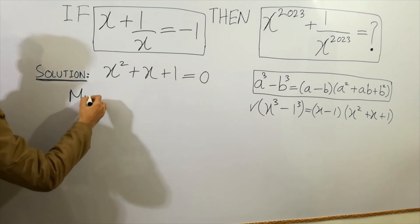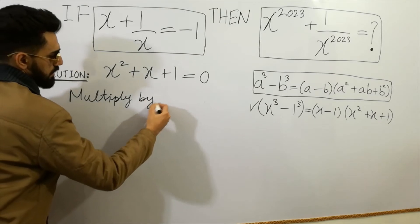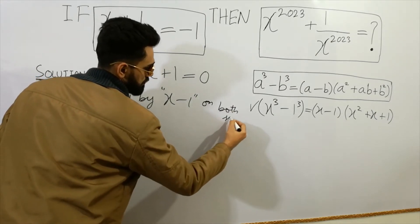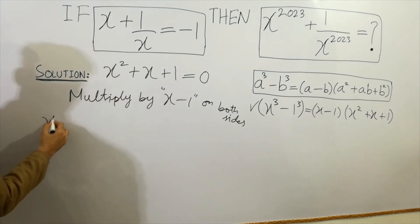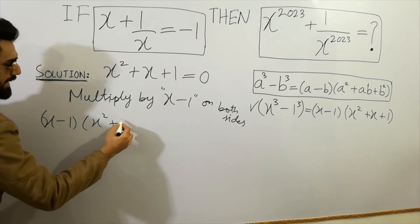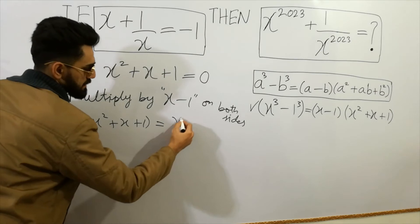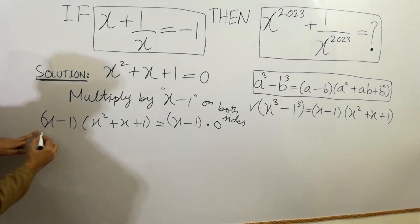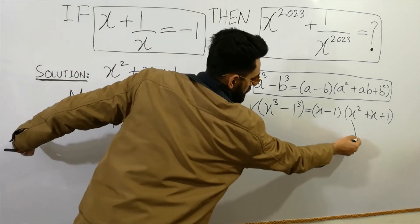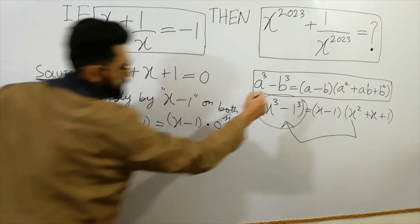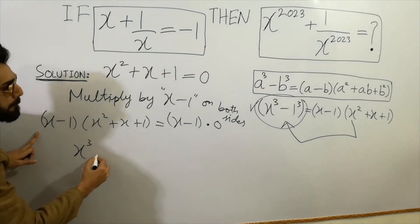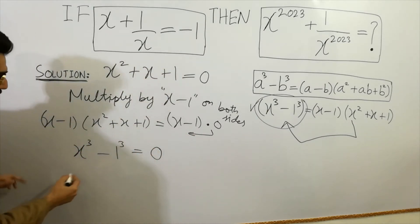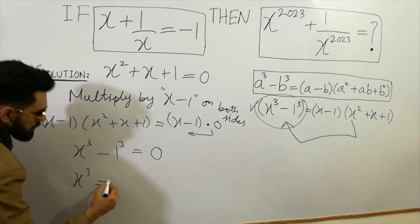Multiplying both sides by x minus 1, we get x minus 1 times x squared plus x plus 1 equals x minus 1 times 0. Since x squared plus x plus 1 equals 0, this gives us x cubed minus 1 cubed equals 0, so x cubed is equal to 1.